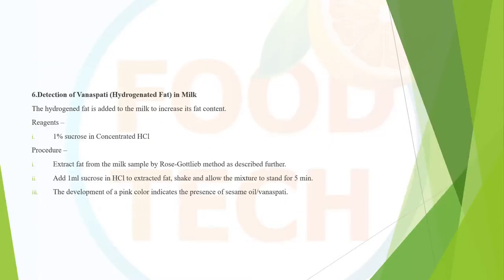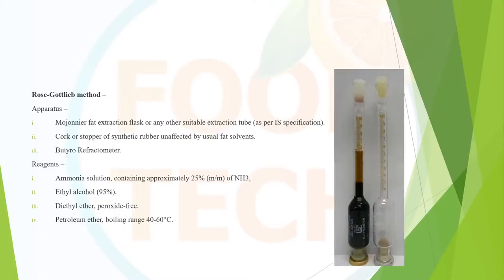Detection of vanaspati or hydrogenated fat in milk — added mainly to increase fat content. This uses the Rose-Gottlieb method to extract fat from milk. A 1% sucrose solution in concentrated hydrochloric acid (HCl) is used as a reagent. After extraction and addition of 1 ml sucrose in HCl, the sample is allowed to stand. Development of a pink color indicates the presence of vanaspati or CSM oil in milk.